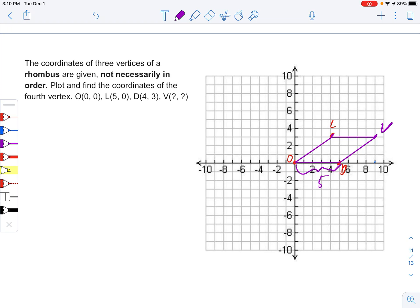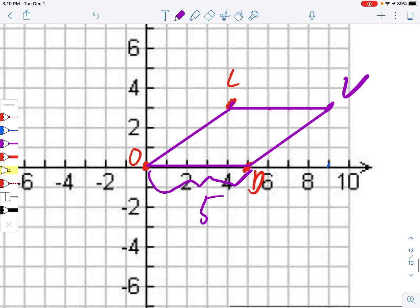Well it turns out, let me zoom in a little bit, we can figure that out because I'm going to change colors. If we make a right triangle with OL as the hypotenuse, right, and that's fairly easy to do on a grid.